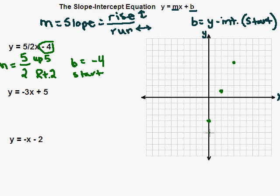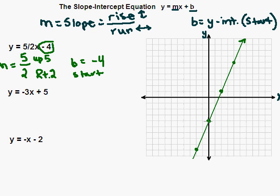If I go down 5 — 1, 2, 3, 4, 5 — to the left 1, 2, I can get a 4th point on that line. Notice they all lie in a straight line. We're graphing linear equations, so if you don't get a straight line, go back and recheck your points. Then we draw in our line connecting those points, and there's my line representing the equation y equals 5 halves x minus 4.